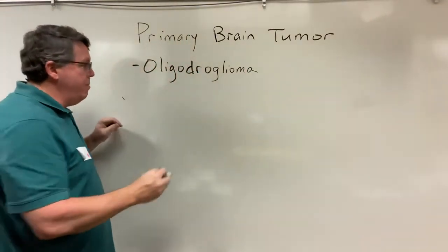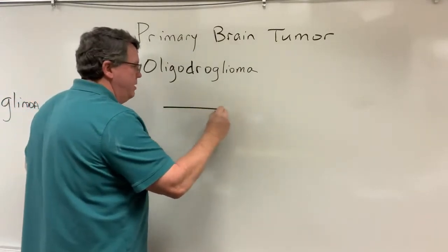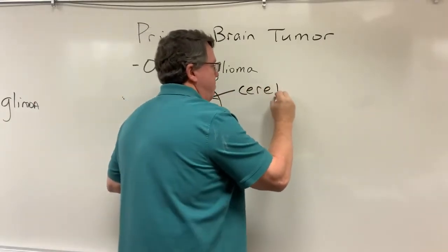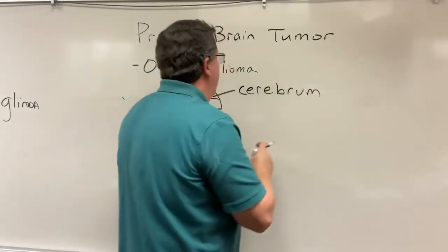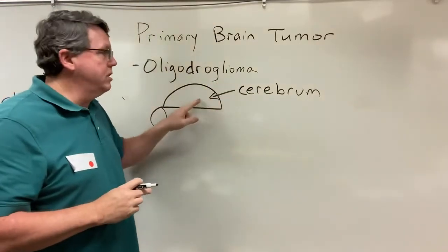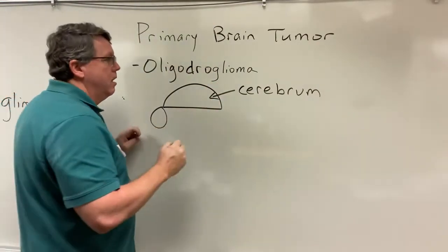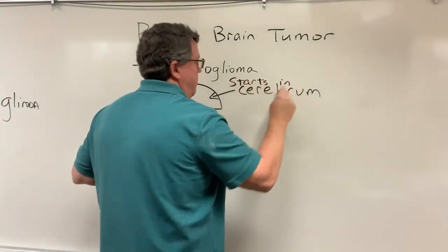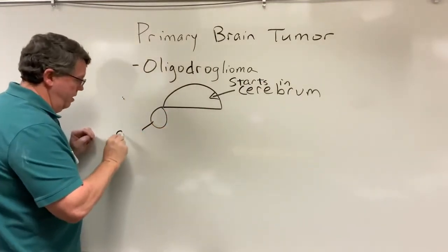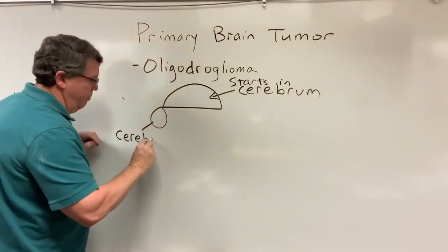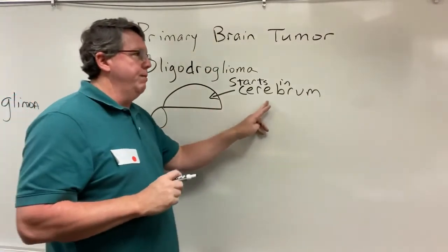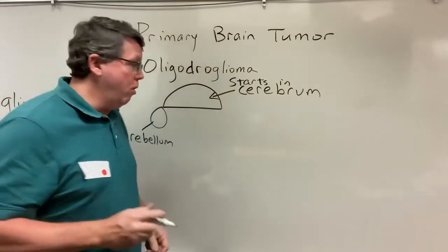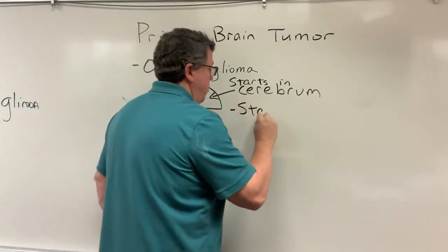So if you remember we were talking about the brain and we said the big part of the brain is called the cerebrum. An oligodendroglioma will usually start in the cerebrum. Okay, and if you remember just down here we had the cerebellum, but for the most part this is going to start in the cerebrum. These start slow and then they tend to grow over time.